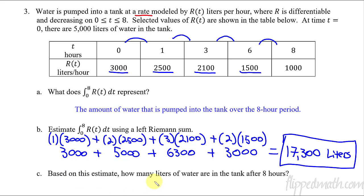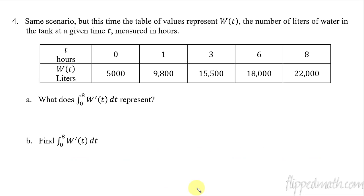And the last part of this one, based on this estimate, how many liters of water are in the tank after 8 hours? So this is how much it's changed by. But we started with 5,000. Right there, 5,000. So we just say that there are now 22,300 liters. Okay, we're doing well. Just one more thing to cover, and then we're good. We're all done.